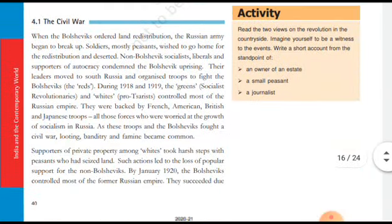During the civil war, the Russian army broke up and their leaders moved to south Russia and organized troops to fight the Bolsheviks. In 1918-1919, the Russian empire was contested by the Greens, socialist revolutionaries, and Whites — pro-Tsarists backed by French, American, British, and Japanese troops. These troops and the Bolsheviks fought a civil war until January 1920.